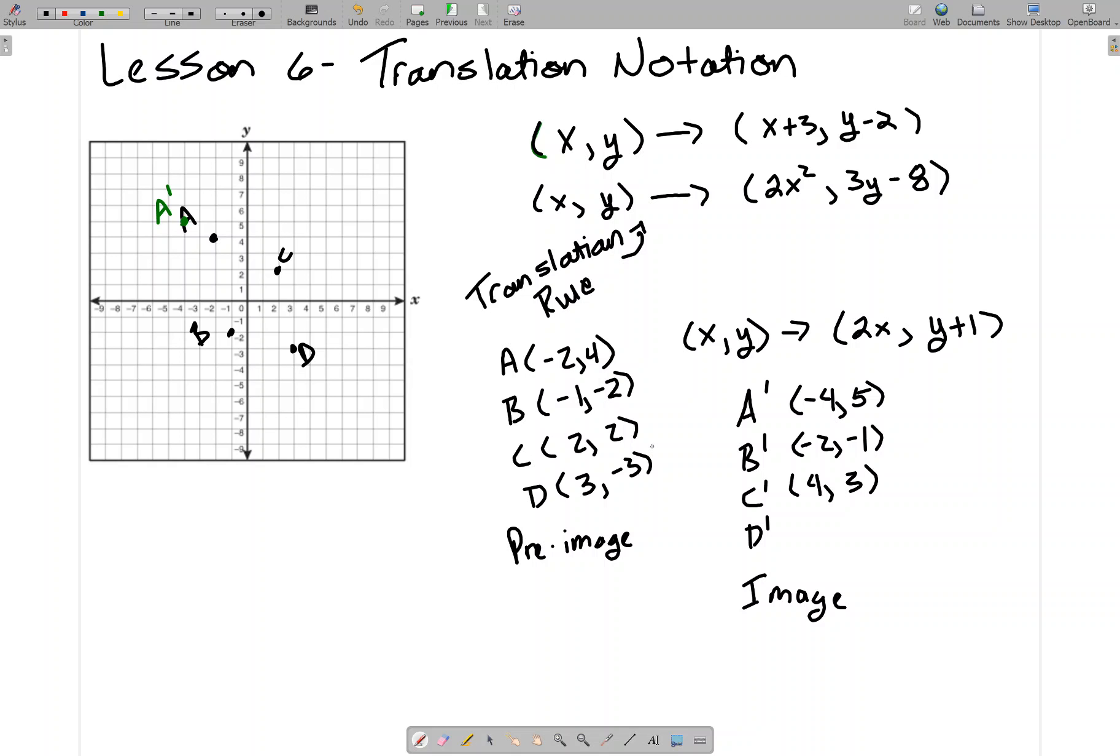D prime is going to go to 6, negative 2. Let me mark all these points here. I've got A prime, B prime is at negative 2, negative 1, C prime is at 4, 3, and D prime is at 6, negative 2.